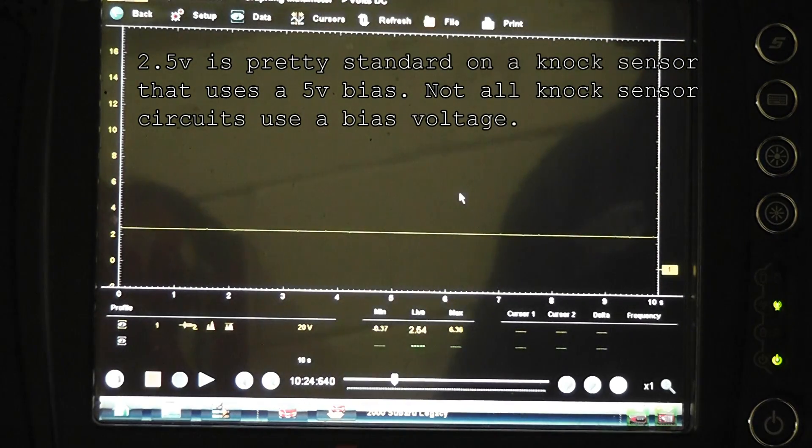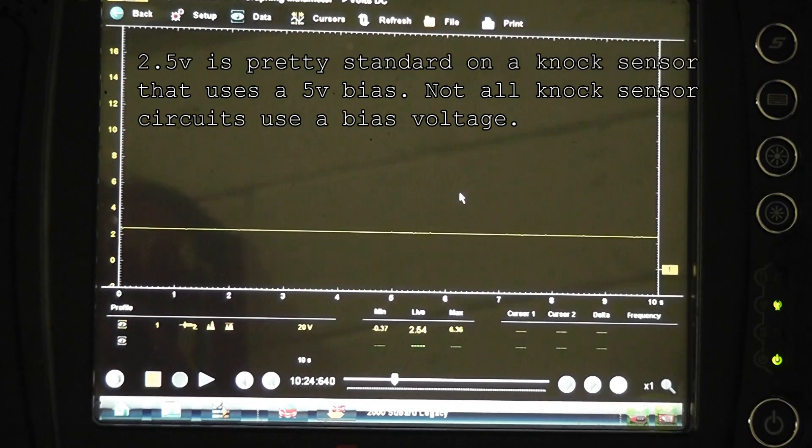So a couple different checks we can do. Take a pry bar, and I'm going to tap on the block next to the knock sensor. We want to see activity on the screen when we do that.